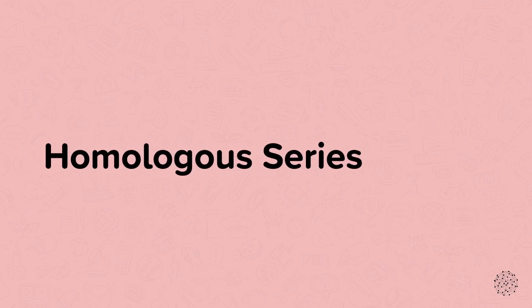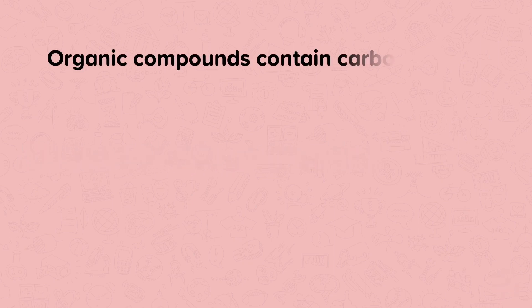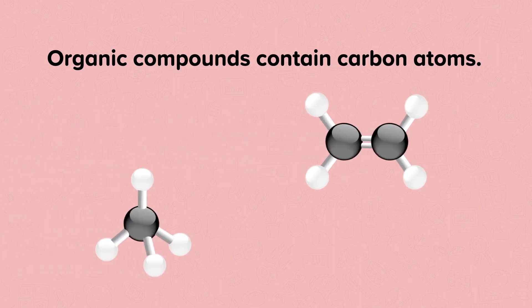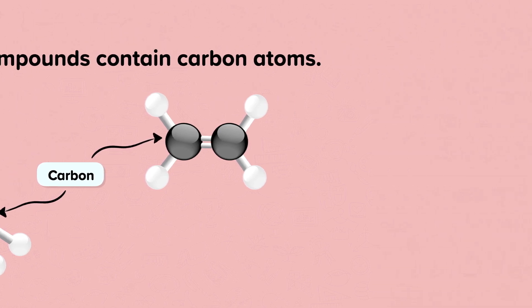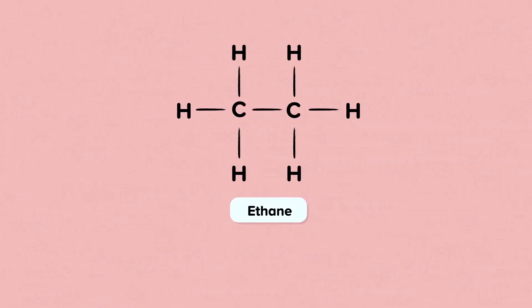Homologous series. Organic compounds contain carbon atoms. The simplest type of organic compounds are the alkanes.